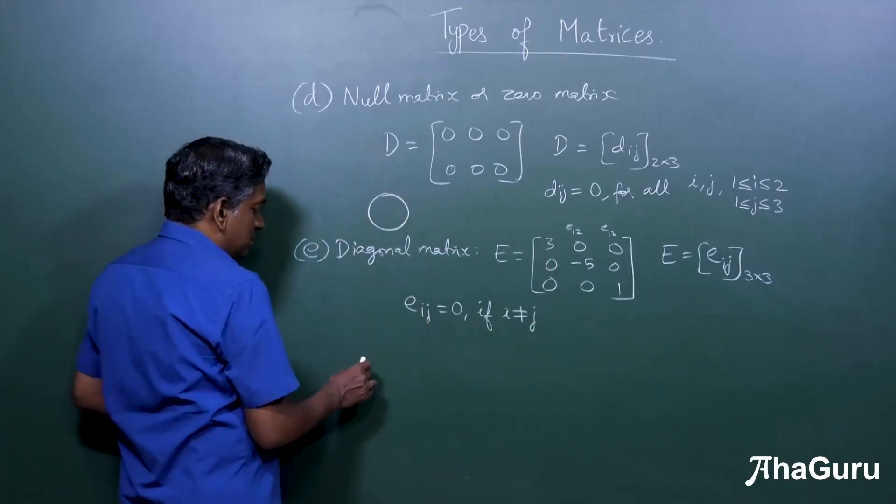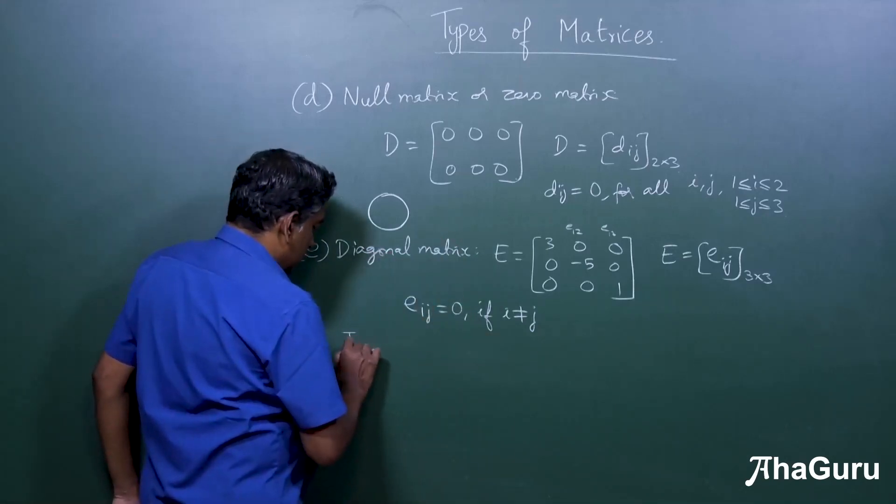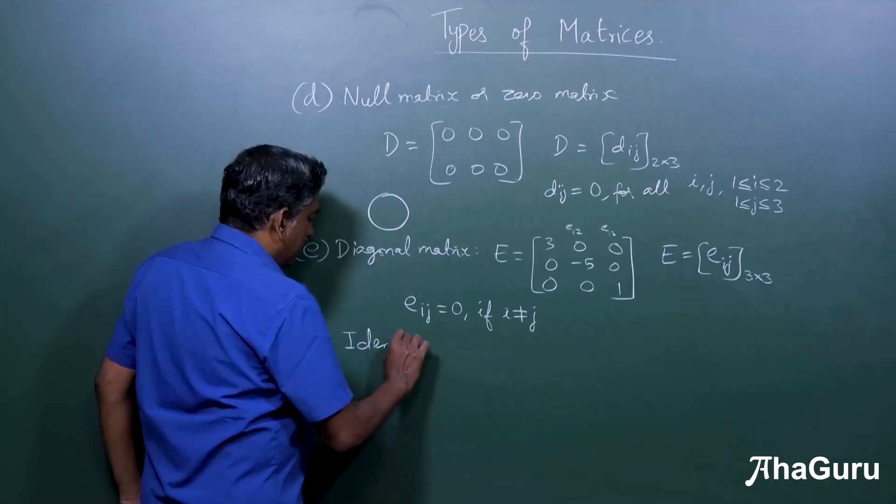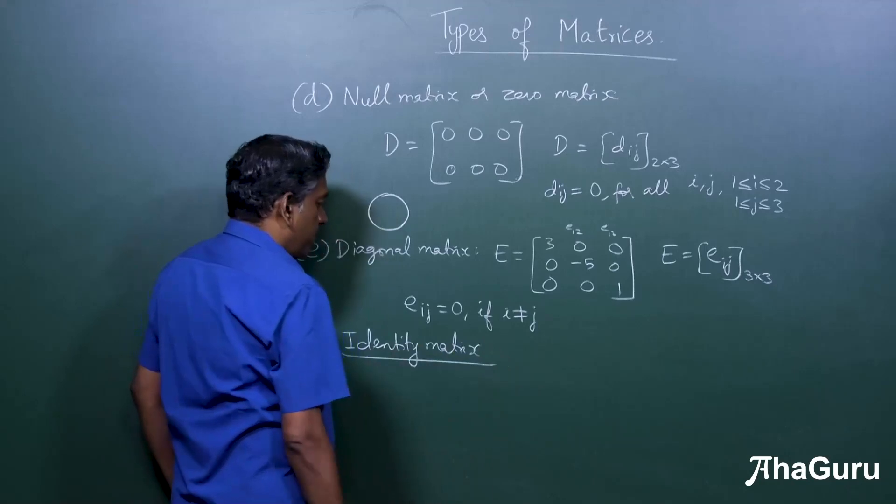Now within diagonal matrices, you have two other subcategories. One is an identity matrix.